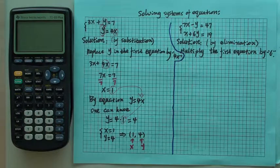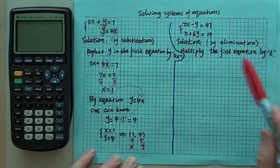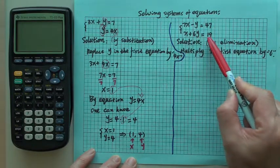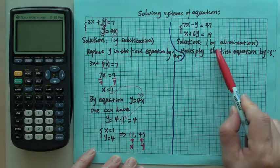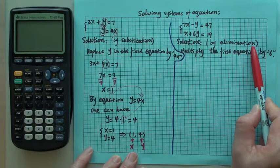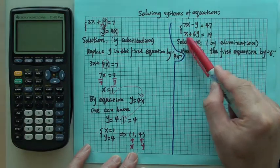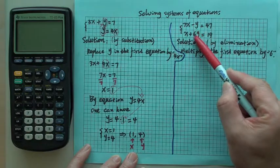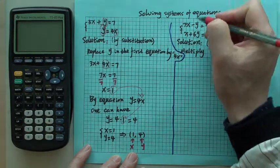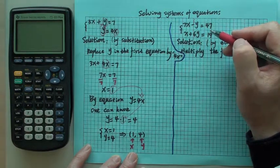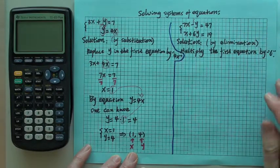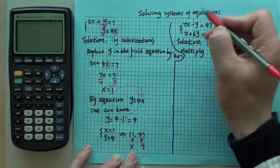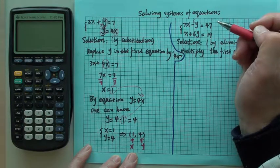Let's look at the second example. Second example is that 7x minus y is 47, and x plus 6y is 19. So we want to do by elimination. Elimination is we want to cancel one variable. Here we can see negative y here is positive 6y. If here were negative 6y, then that would be nice because we can add together and they'll cancel. But unfortunately here is not. But we have a way to make it.